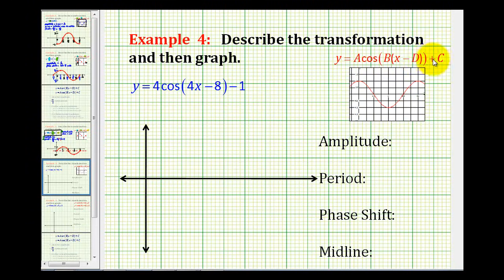Looking at our notes for the transformations of cosine, the first thing we need to recognize is that we have to factor 4x minus 8 to make it fit this form. So let me rewrite this. We'll have y equals 4 times cosine, and this will be 4 times the quantity x minus 2 minus 1.